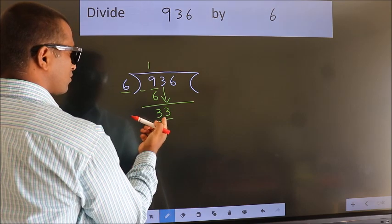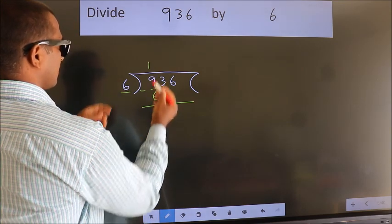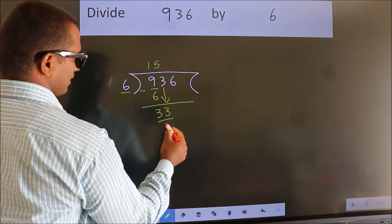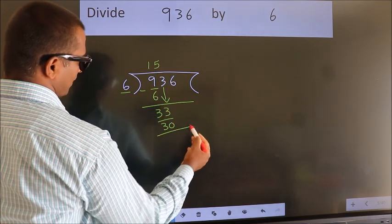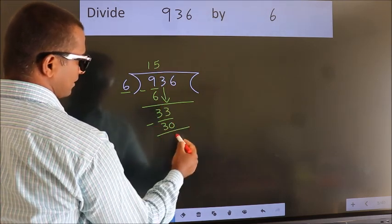A number close to 33 in 6 table is 6 fives 30. Now, we subtract. We get 3.